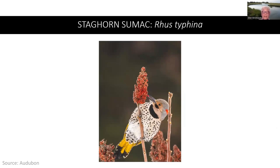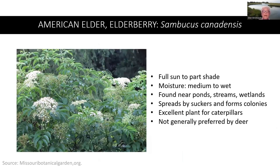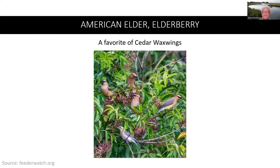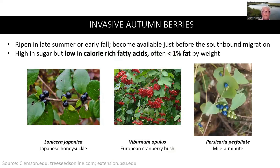The staghorn sumac is a wonderful choice too. American elder, or elderberry, is found near ponds, streams, and wetlands. It spreads by suckers and forms colonies. It's an excellent plant for caterpillars and is not generally preferred by deer. The American elder is a favorite of cedar waxwings, which like to feed in flocks. There are many species of invasive autumn berries that ripen in late summer or early fall. They are high in sugar but low in calorie-rich fatty acids — often less than 1% fat by weight. Examples are Japanese honeysuckle, European cranberry bush, and myelaminant.